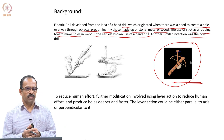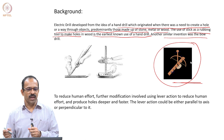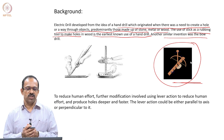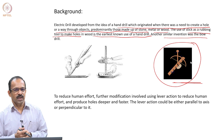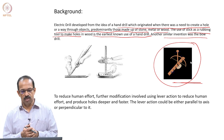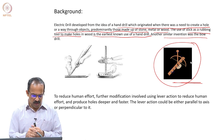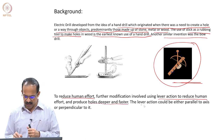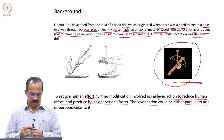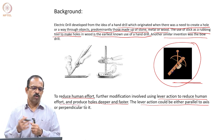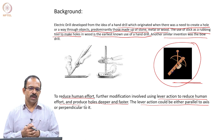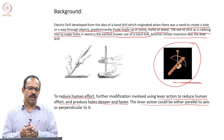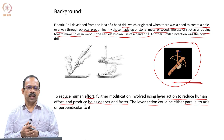After the introduction of electricity, instead of having a reciprocating motion converted to rotary motion, we started getting electric motors which can directly provide rotary motion. That rotary motion is connected to the tool and you can drill holes. This was basically to reduce human effort and to produce holes deeper and faster — the lever action could be either parallel or perpendicular to the axis. When you prepare the report, include a brief history of the drilling machine and how it evolved to the current form.